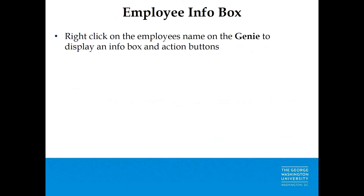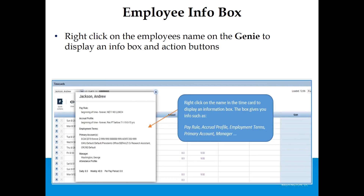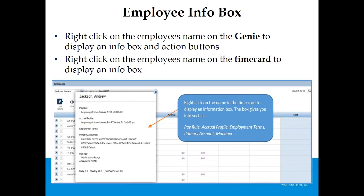Employee Info Box: Right-click on the employee's name in the Genie to display an info box and action buttons. The box gives you options to add a punch, add a pay code, and approve a time card. Right-clicking on the employee's name in the time card displays an info box with details such as payroll, accrual profile, employment terms, primary account, and pay manager.